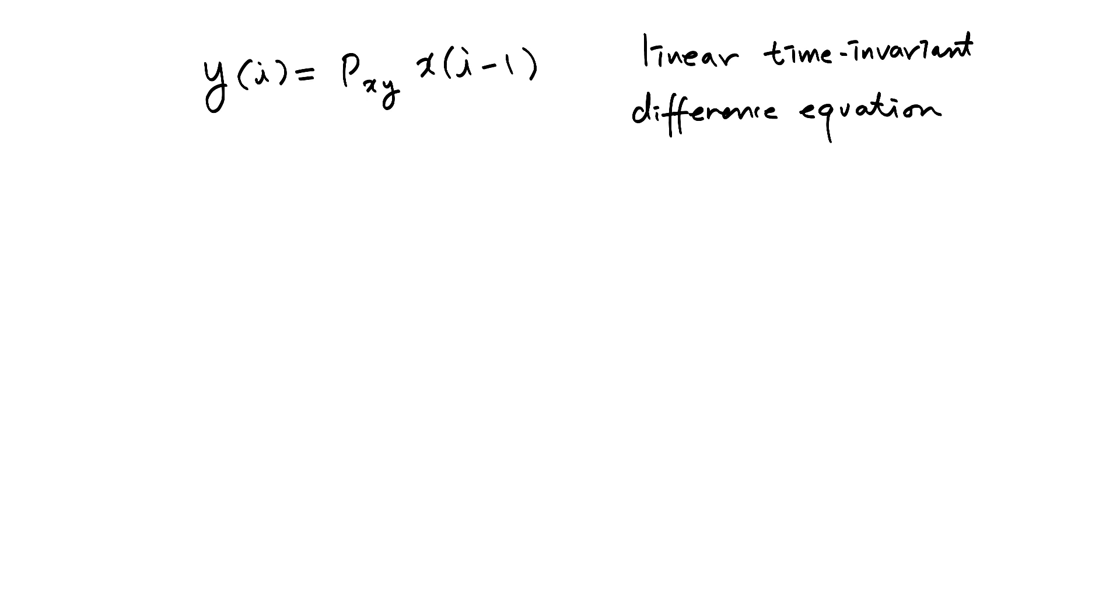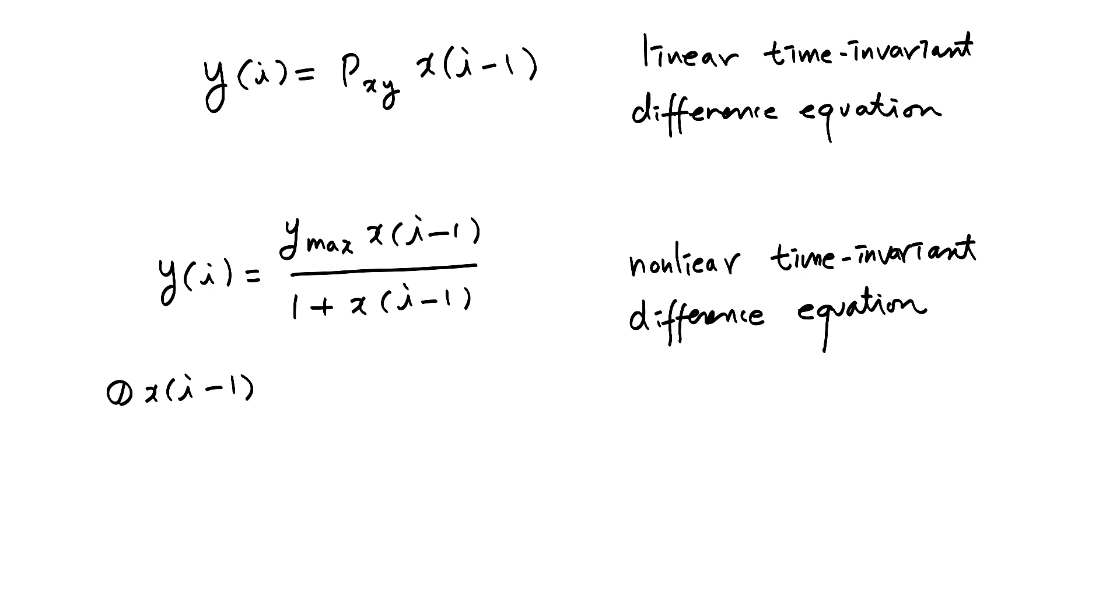Let's have another model. This time we will have nonlinear time-invariant difference equation. And what do we have here? What if X of I minus 1 is 0? There is no X. Then this value becomes 0, and this value becomes 0. So we have 0 over 1, which is 0.